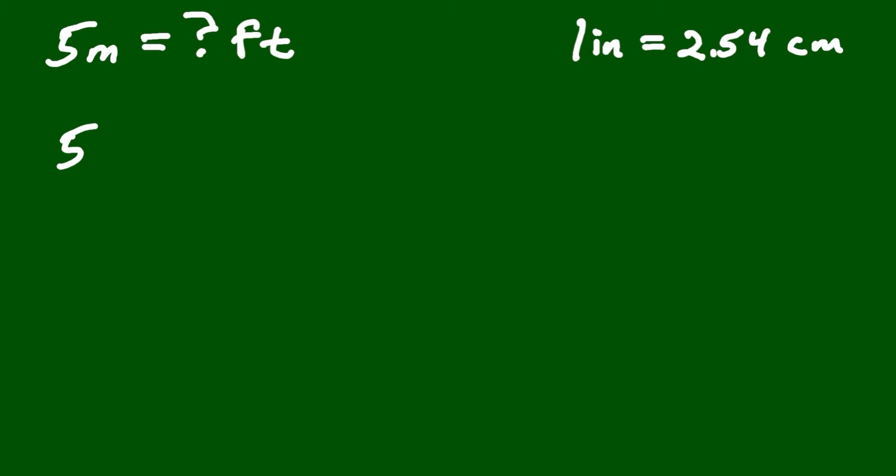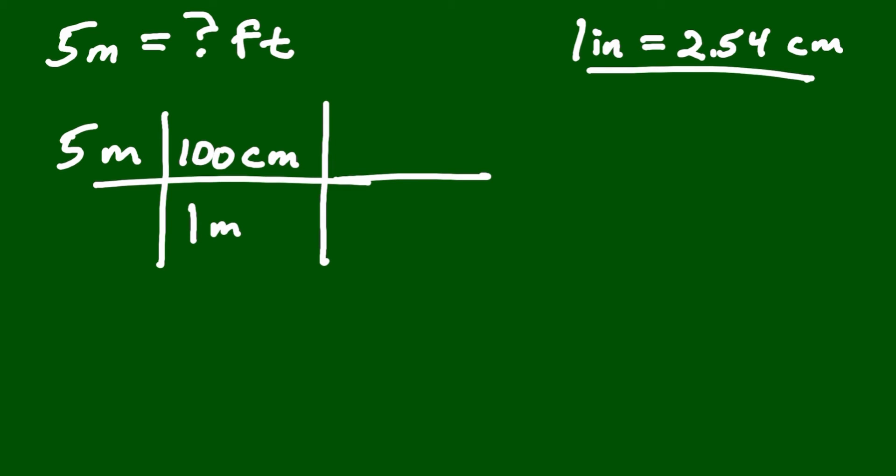We take our 5 meters and we know that 1 meter is equivalent to 100 centimeters. Now we'll use our conversion factor: 2.54 centimeters is equivalent to 1 inch, and we know that 12 inches is equivalent to 1 foot.